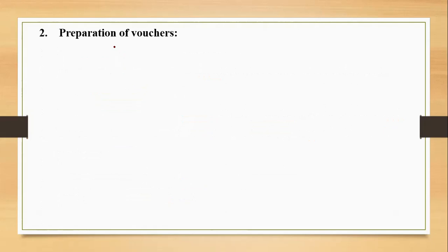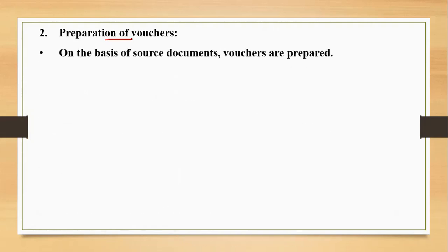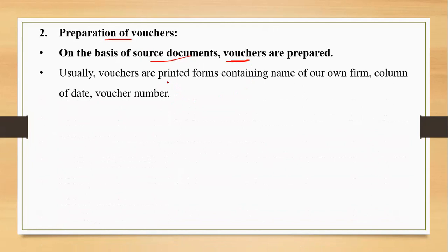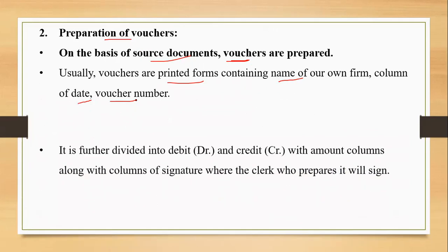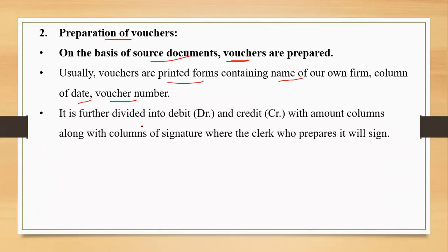The second step is preparation of vouchers. When source documents are discussed, vouchers follow. Vouchers are always in printed form and are prepared on the basis of source documents. They contain the name of the firm, date, voucher number, and details of the transaction. The accountant writes the accounts to be debited and credited, so the voucher is divided into debit and credit columns with amount columns. The clerk who prepares it signs, and an authorized signatory also signs, making it a valid document.